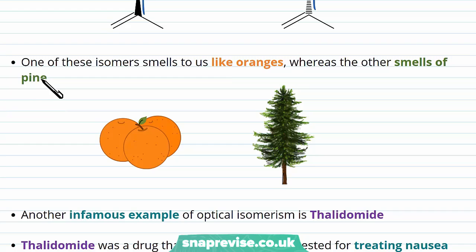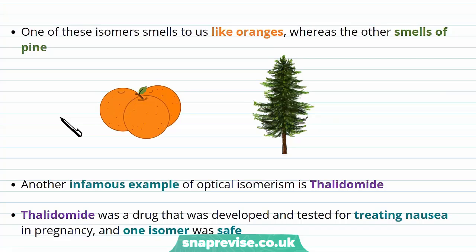If we turn this over so they were pointing in the same direction, this part of the molecule would no longer match up with the other side. One of these isomers smells to us like oranges, whereas the other smells like pine trees. These aren't scents that you would count as particularly similar, but they come from more or less the same chemical, just with a different orientation in space, and we smell them so differently.